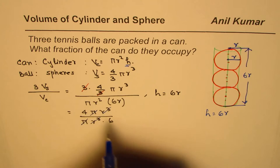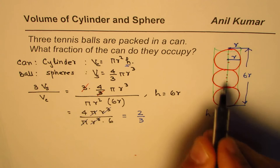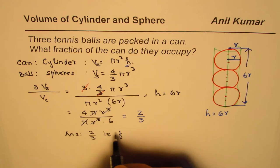Now r³ and r² will cancel, π and π will cancel, and you can simplify four and six to write as 2/3. So the answer is 2/3. Two-thirds is occupied by the balls, so the answer is 2/3, or two over three is the fraction occupied.